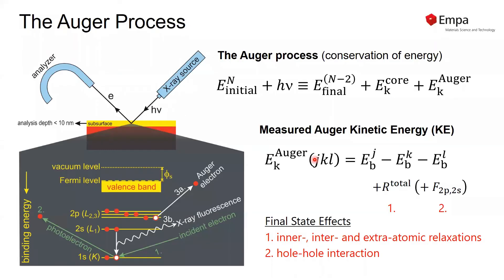We can consider the Auger process in a similar way, by considering the energy of the initial system plus the energy of the incoming photon. We measure the emitted core electron and the kinetic energy of the emitted Auger electron.